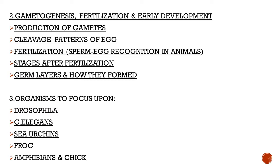Fertilization is very important — questions mostly appear in Section C. First, memorize the general steps of fertilization one by one. Focus on the important events in the process: sperm and egg recognition, the layers of the egg, how ZP1, ZP2, and ZP3 interact with the sperm, what the acrosomal reaction is, which receptors are present, which binding messengers are present, and what stimulates the process. You need to read this topic very thoroughly because a question from fertilization definitely appears in Section C.